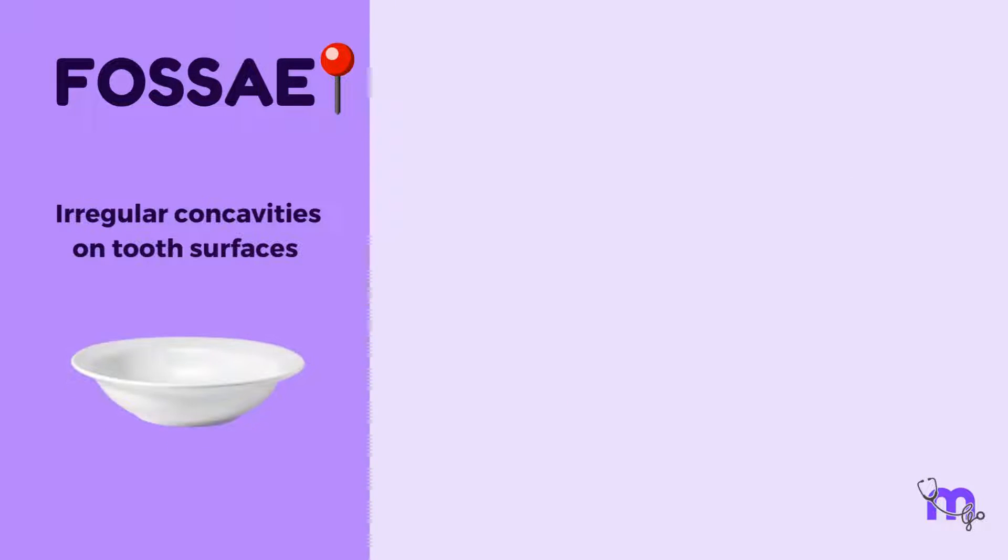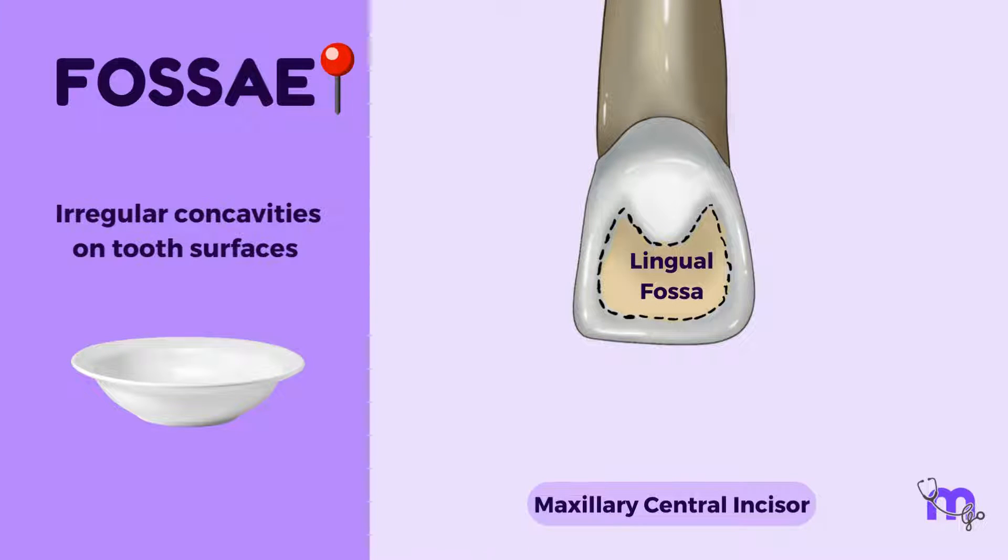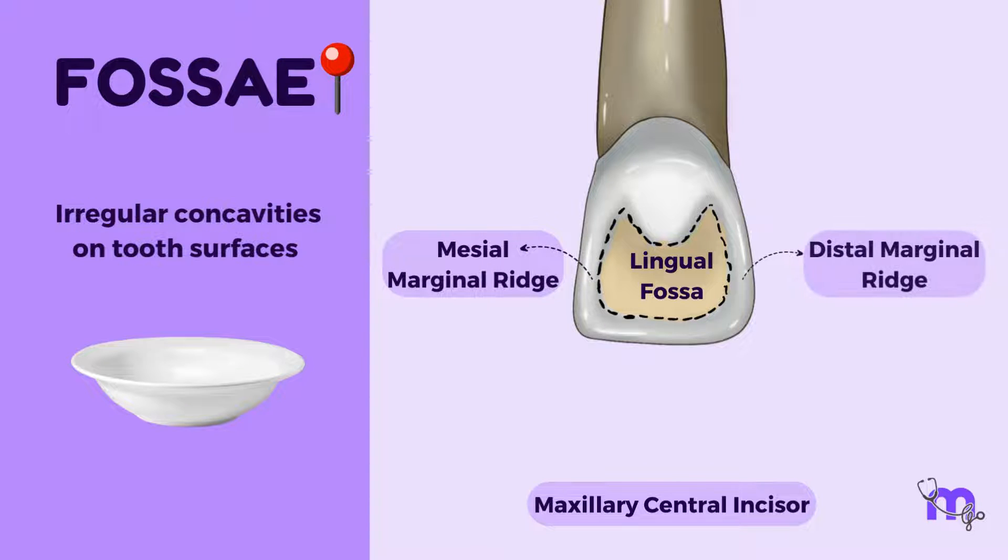Fossa are irregular concavities on tooth surfaces that resemble gentle basins. They are also named based on their location. On the lingual surfaces of anterior teeth, there is the presence of the lingual fossa, bordered on each side by the mesial and distal marginal ridges, cervical by the cingulum, and incisally by the incisal ridge.